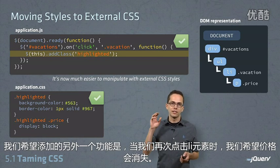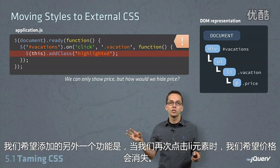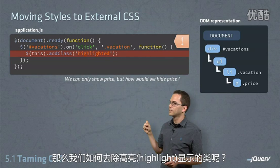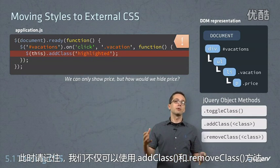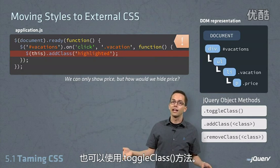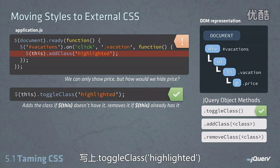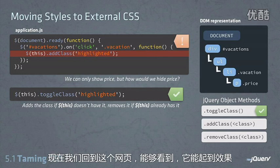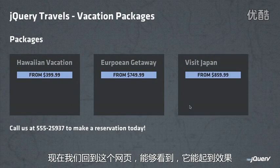One more feature we want to add is: when we click on the li for the second time, we want the price to go away. So how do we remove the highlighted class? Remember, not only do we have addClass or removeClass, but we can also do toggleClass. We'll add toggleClass highlighted, and then it will add the class if it doesn't have it, and if it does, it will properly take it away. And here we are back in our web page — and as you can see, it works.